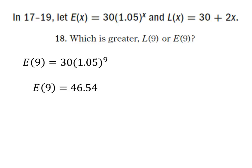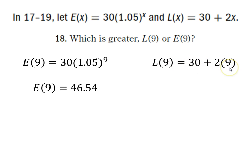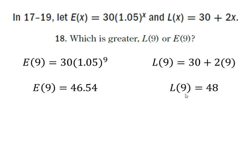Now evaluating L of 9: L of 9 equals 30 plus 2 times 9. Two times 9 is 18, and 18 plus 30 is 48. So the question is which is greater, L of 9 or E of 9? E of 9 is 46.54, and L of 9 is 48 — so L of 9 is greater.